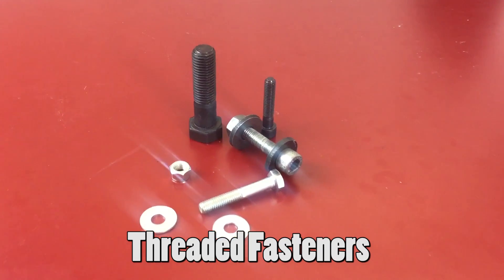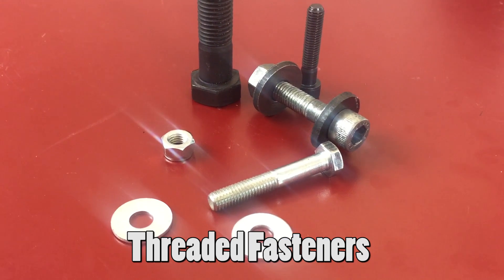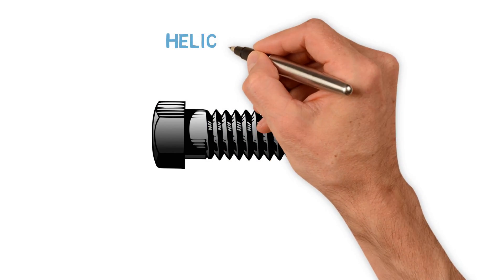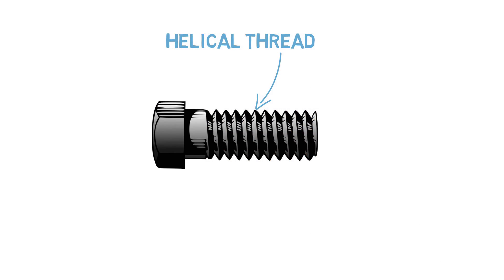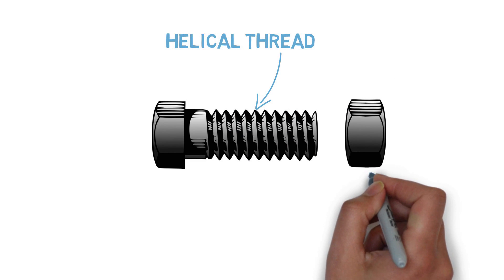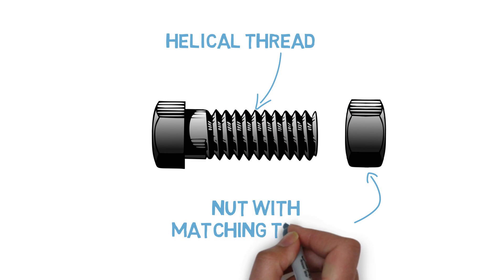The types of fasteners we use in engineering structures are broadly characterized by how they are installed. The first category is a threaded fastener, which uses a helical structure known as a thread to screw into a material or to interlock with a matching thread, such as in a nut. These types of fasteners have the advantage that they can be removed and reinstalled. However, as we will see later, this can sometimes also be a disadvantage.